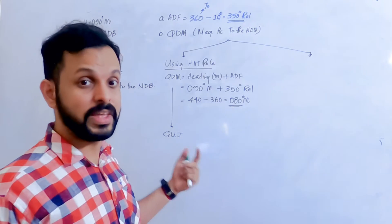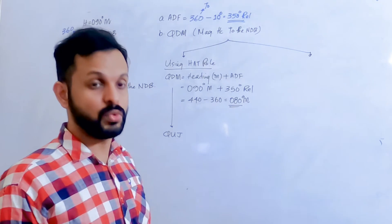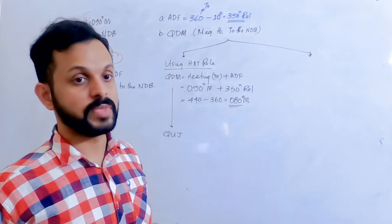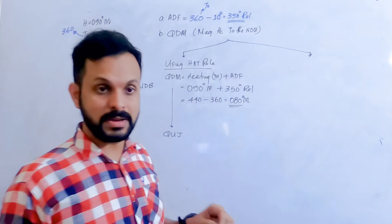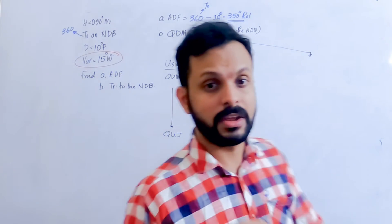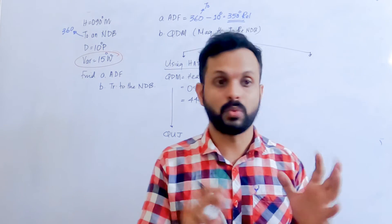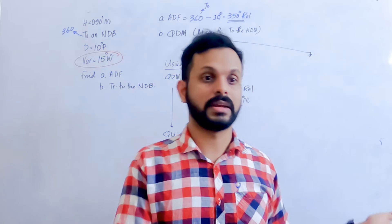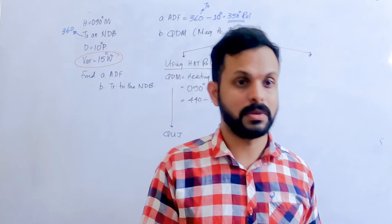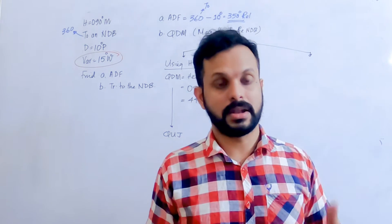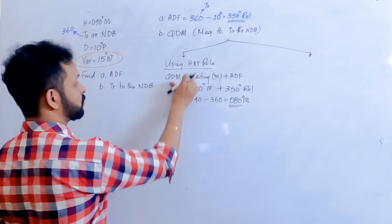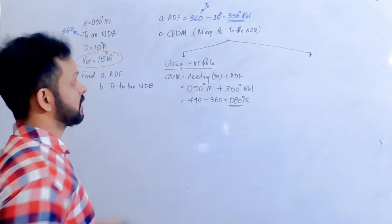If they ask for a true value — a true track — then you will need the variation. In NDB-based questions, that variation has to be the variation at the aircraft side. QUJ is not required in this question, so I'm leaving that.